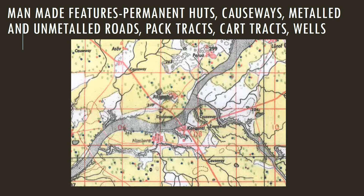Now let's look at man-made features. In this area we can see red huts — these are permanent settlements, or permanent huts. A causeway is also shown here; it is an elevated stretch of land built so people can cross a river during the rainy season. The red continuous parallel lines represent a metalled road, while two dashed parallel lines represent an unmetalled road.